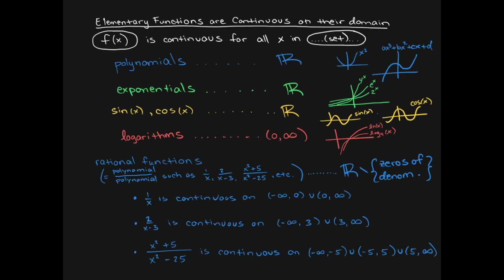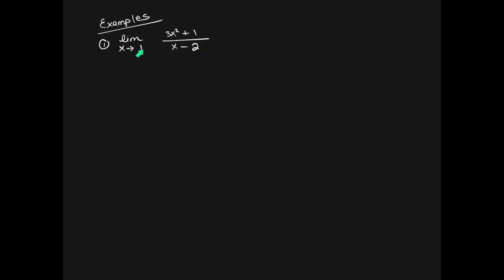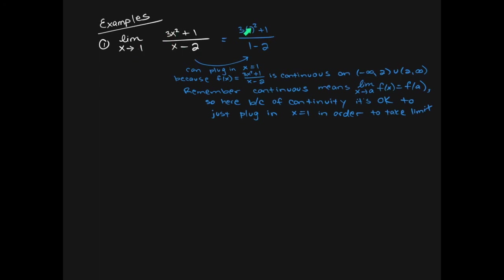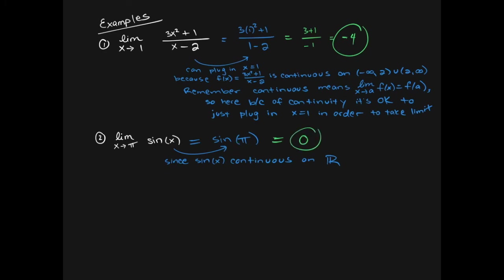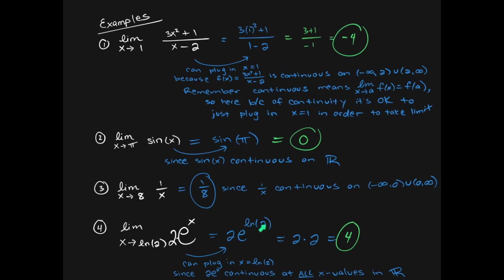How can we use continuity to actually find limits? For a polynomial divided by a polynomial with x approaching one, if the function is continuous at x equals one, we can just plug in one — the answer is negative four. The sine function is continuous everywhere, so plugging in x equals pi gives sine of pi equals zero. For an exponential function, we can plug in ln of two, and e to the ln of two simplifies to just two because e and ln are inverse functions.